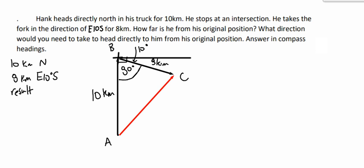I now have two sides and an angle, so I can use the cosine law. So this side over here would be A, this would be C, and this would be B.